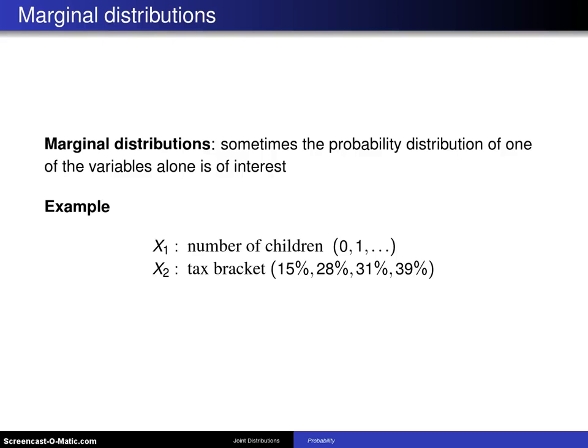There is something that is known as a marginal distribution, and it works as follows. Sometimes the probability distribution of one or more of the variables alone is of interest.